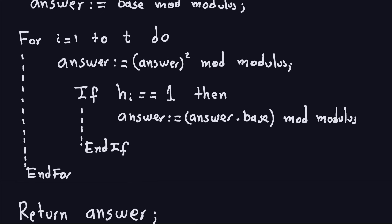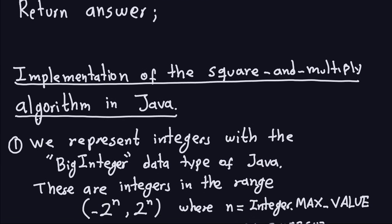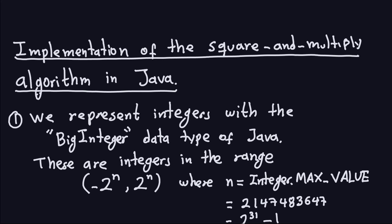Now we want to implement this in Java. We have to think about how we are going to represent these numbers, because remember these numbers are huge. Data types like int or long will not be sufficient, because those ranges are not big enough. So we are going to represent all the integers — in this case positive integers — using the BigInteger data type of Java. BigInteger is a really, really big integer — it's not an int or a long.